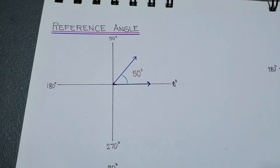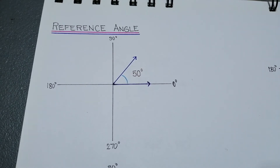Let us now define reference angle. When we say reference angle, it is simply the acute angle formed by the terminal side and the x-axis — either on the positive x-axis or negative x-axis — as long as it is an acute angle. Let's go straight to the examples.